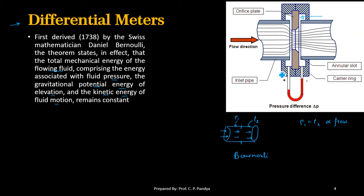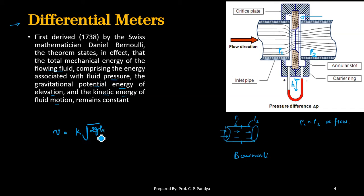Here we get the difference in heights, indicated by H. If we take the pressure as P1 at one point and P2 at another, then the velocity equation becomes: V = K × √(2gh/ρ), where g is the acceleration due to gravity, h is the differential height or differential head, and ρ is the density of the flowing liquid.